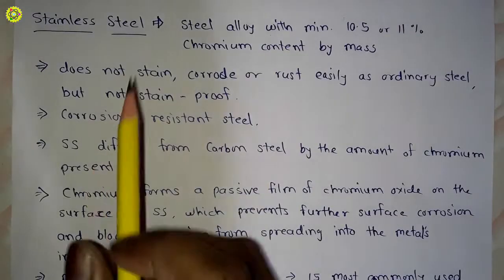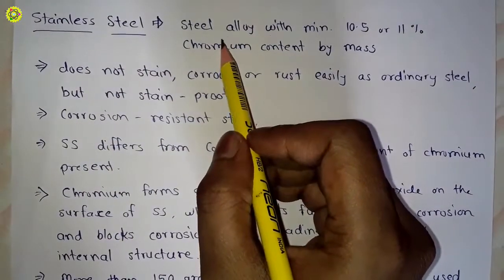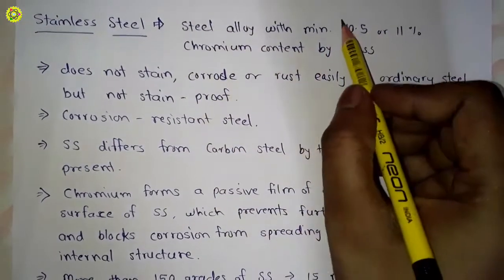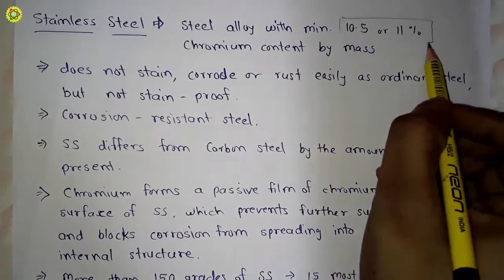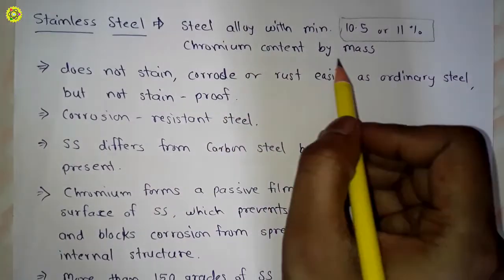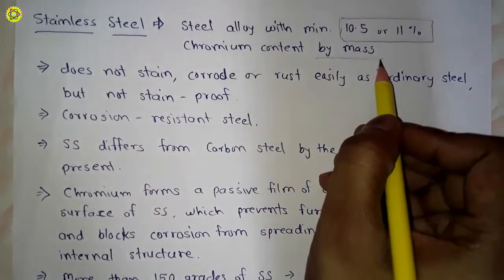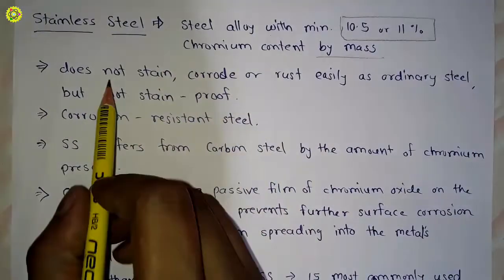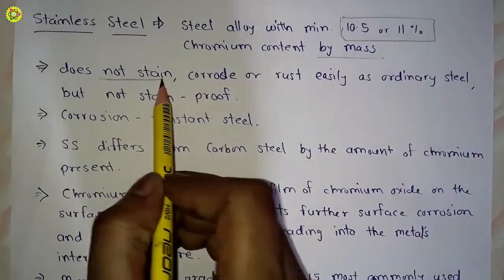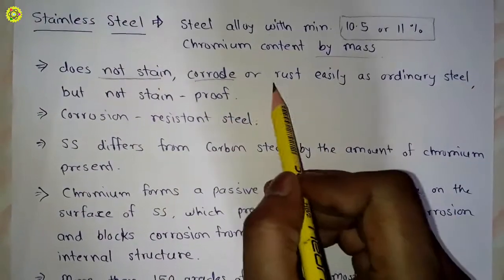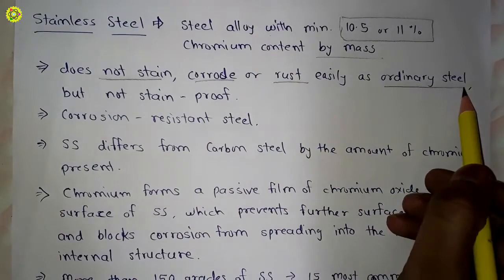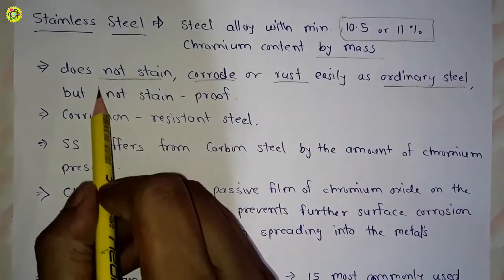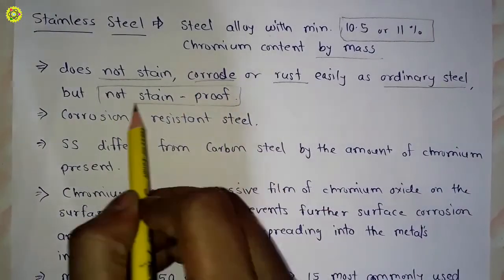Stainless steel is defined as a steel alloy with a minimum 10.5 or 11 percent chromium content by mass. Stainless steel does not stain, corrode, or rust easily as ordinary steel, but it is not stain proof.